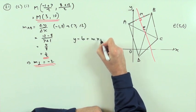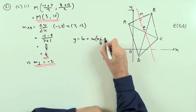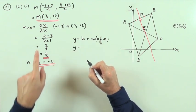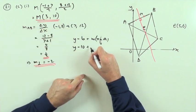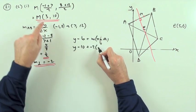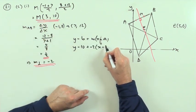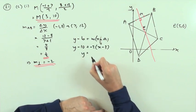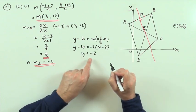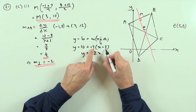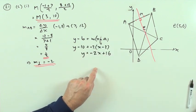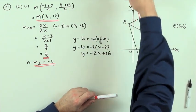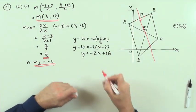y minus b is mx minus a. y minus the point on it was this midpoint. y minus the y coordinate 10 is -2 times x minus the x coordinate which is 3. It's all integers, so I'll just put it as y = -2x and that's going to be +6 +10, +16. And that looks a bit right from the diagram. Gradient -2 and cuts somewhere way up there at 16.